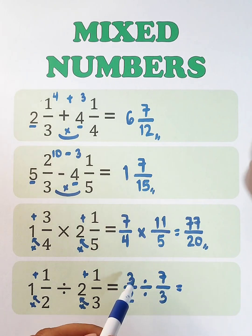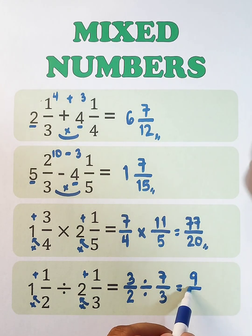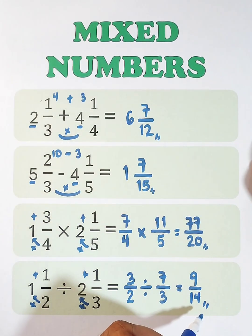What's next is a shortcut. 3 times 3, that would be 9, over 2 times 7, which is 14. And as you can see, the quotient is 9 over 14.